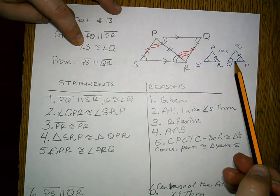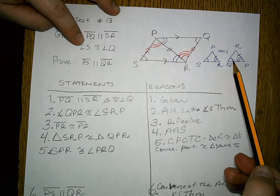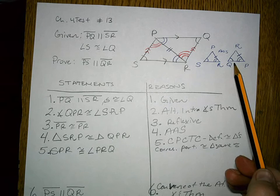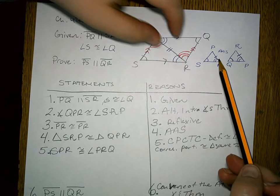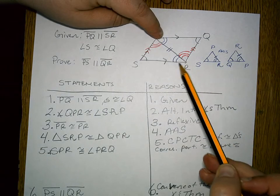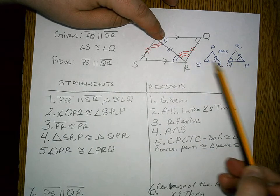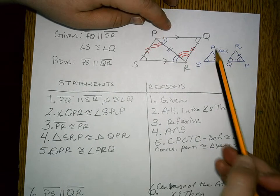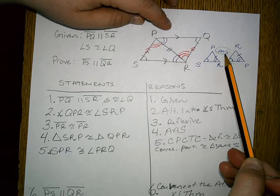If you have to prove any triangles congruent as part of the proof, separate out the triangles and write in all of the information that will help prove the two triangles congruent. Also, write down why the two triangles are congruent.